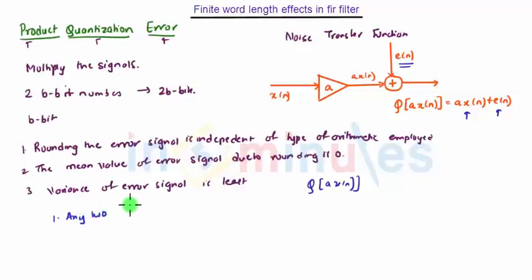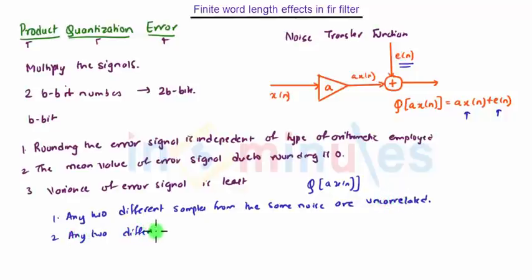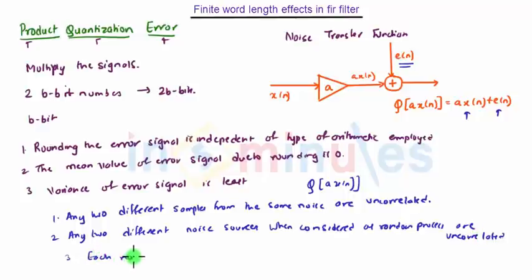First, any two different samples from the same noise are uncorrelated. Any two different noise sources when considered as random process are uncorrelated. Each noise source is uncorrelated with input sequence.